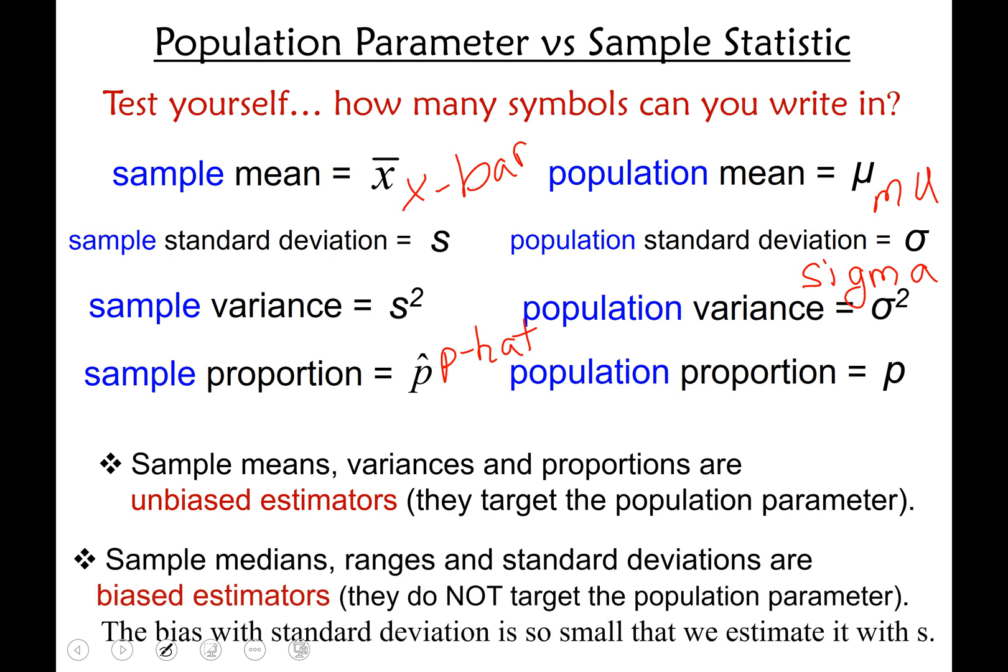That is not the same case for medians, ranges, standard deviations. These are what we call biased estimators and you do not want to use them to target the population parameters.